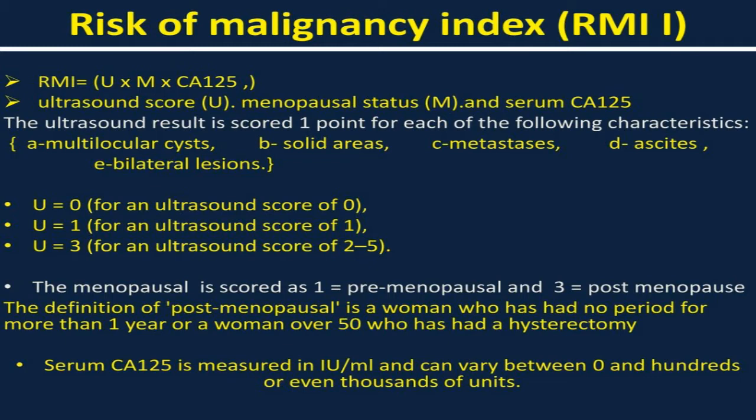The risk malignancy index is calculated by scoring three items. First is CA-125, which is a tumor marker of ovarian cancer. Second is the menopausal state of the woman, whether pre-menopausal or post-menopausal. Third is the ultrasound findings of the ovarian cyst.